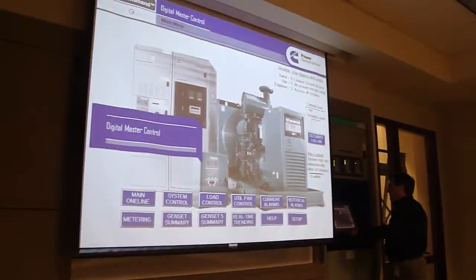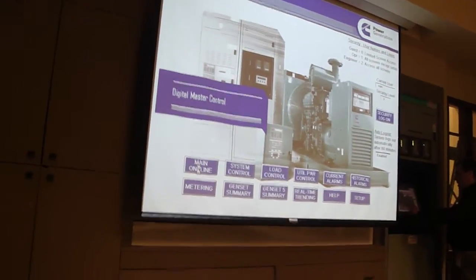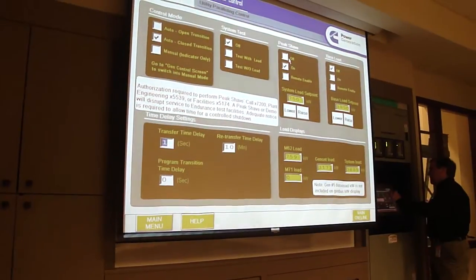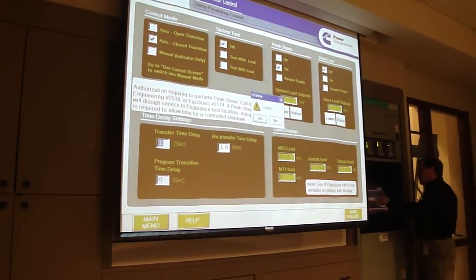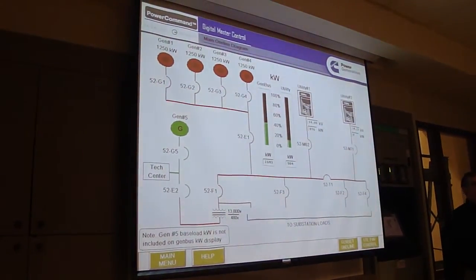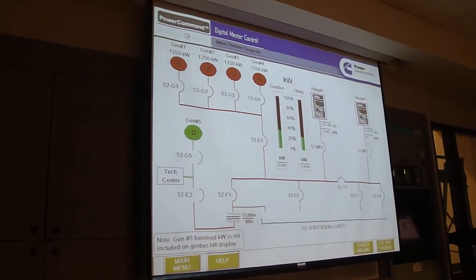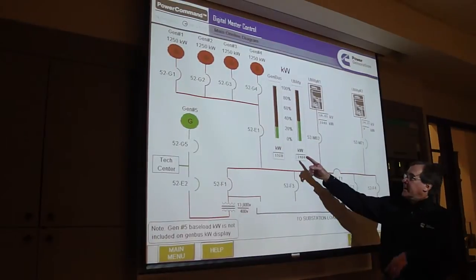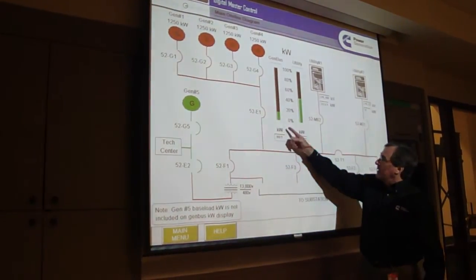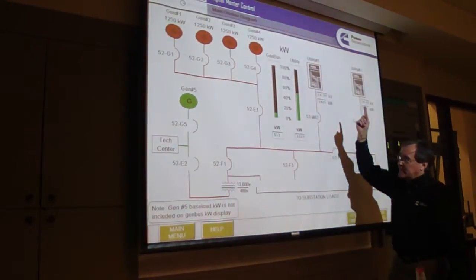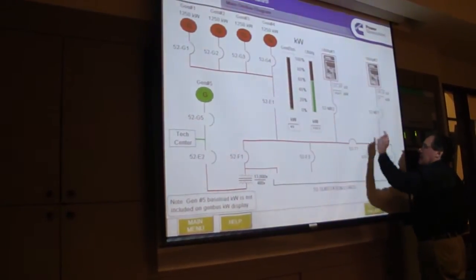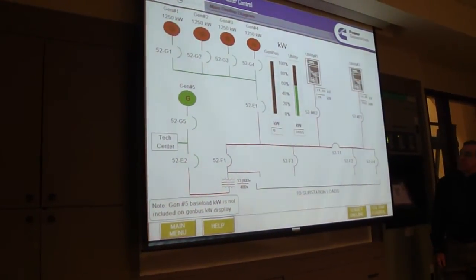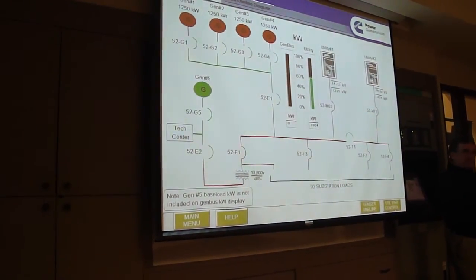I'm going to turn it off here and then go so you can watch that happen. The master control was put in about 10 to 12 years ago and has been upgraded once. Now it's ramping back as I told it — it's ramping back by backing off the fuel. When it gets to below 10%, it will open the breakers, transfer this back, close the breaker in the other room and open this one. And now they're just going to run and cool down for 10 minutes.